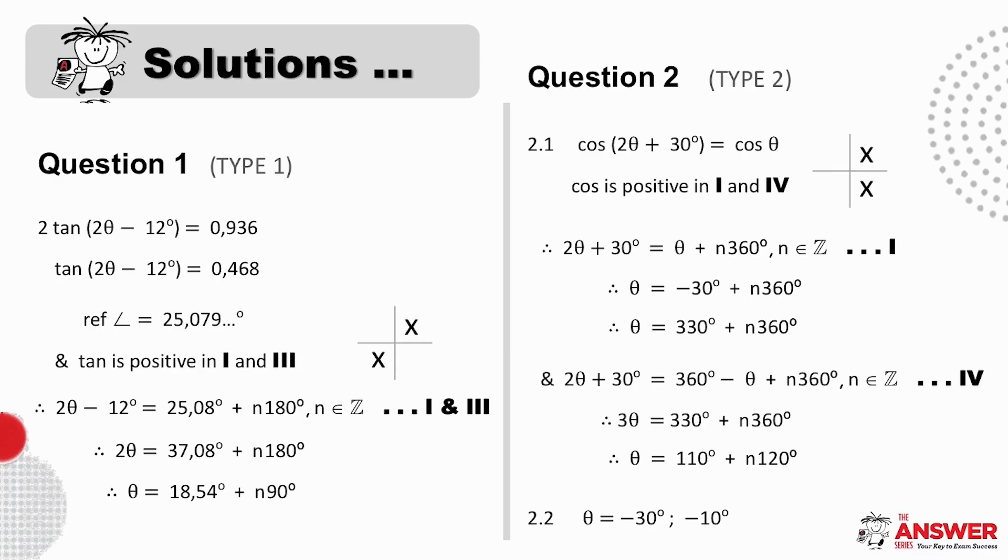Question 1 was a type 1 equation, a ratio equaling a value. It's important here to remember to divide through by this 2 before finding the reference angle. Once set up your equation, remember for tan it is plus n 180, because both quad solutions can be included in this one equation. In this question they asked for the general solution, so this is your final answer.